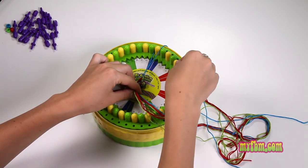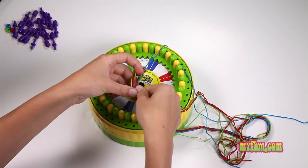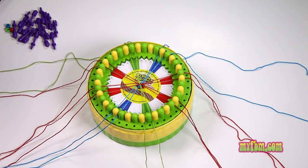Next, I have two red. Once all your strings are in place, you can start putting on your bobbins.